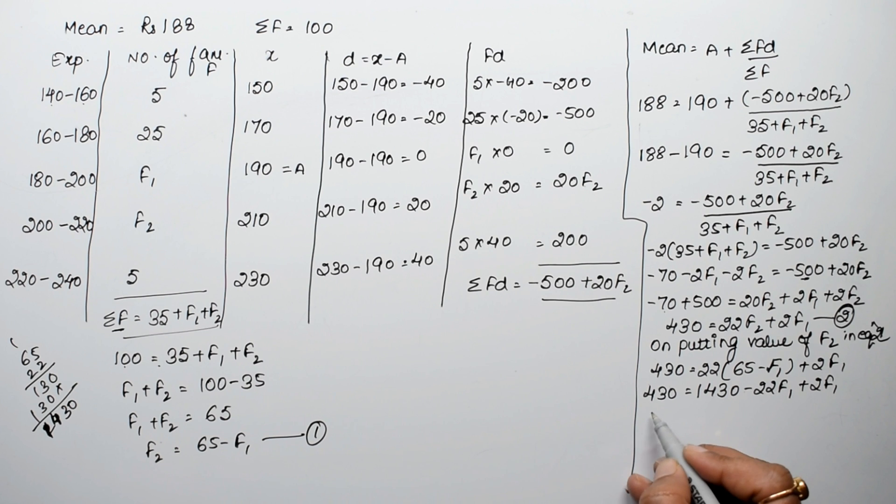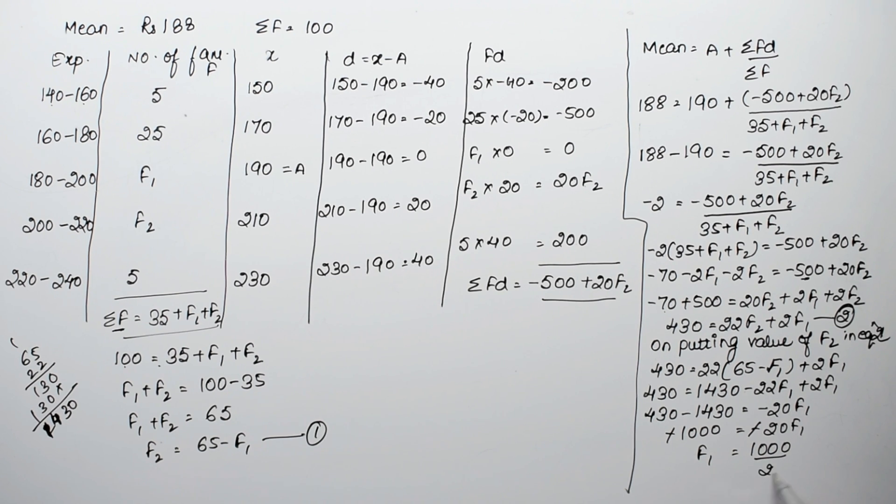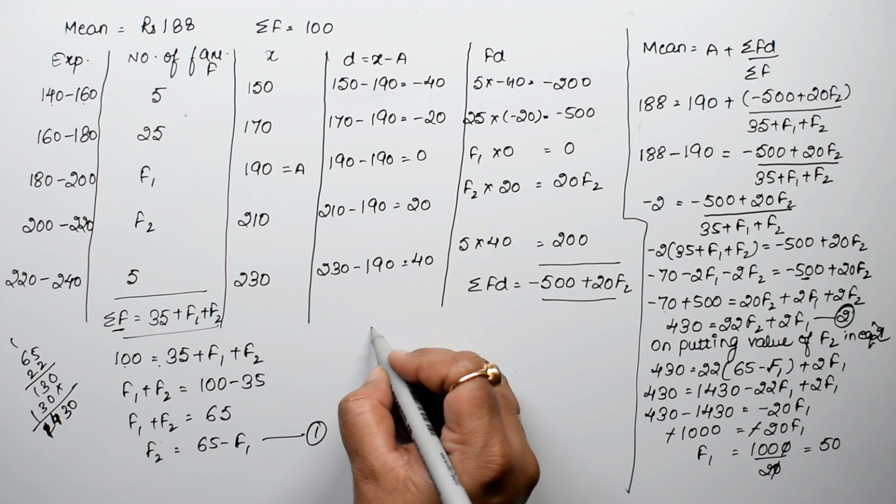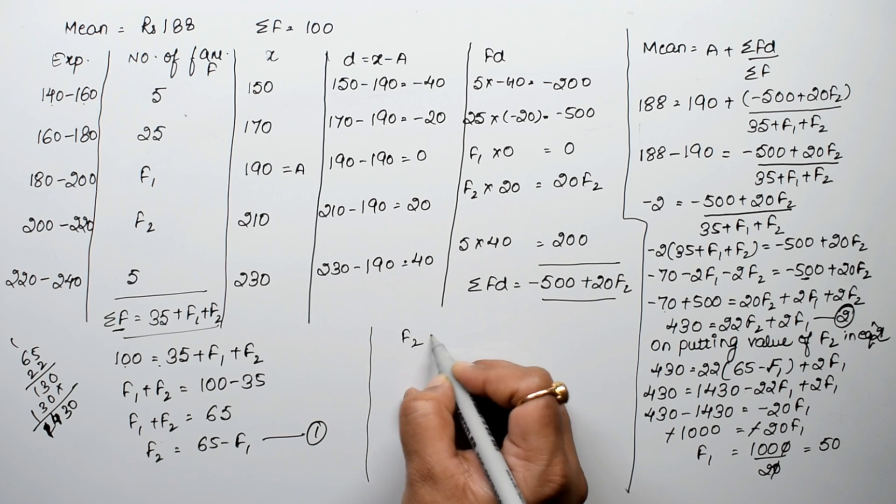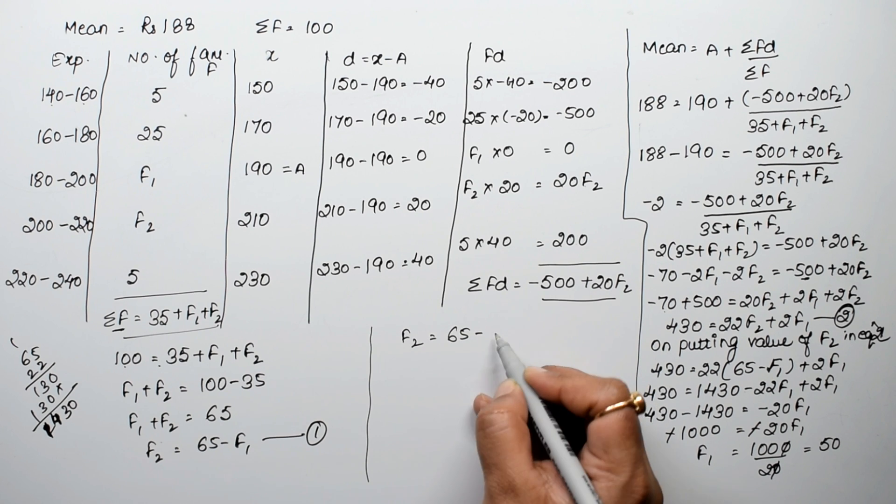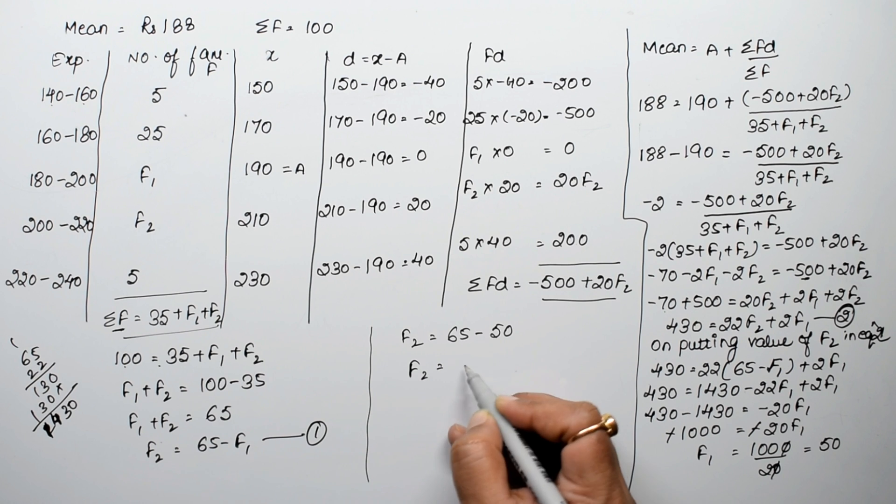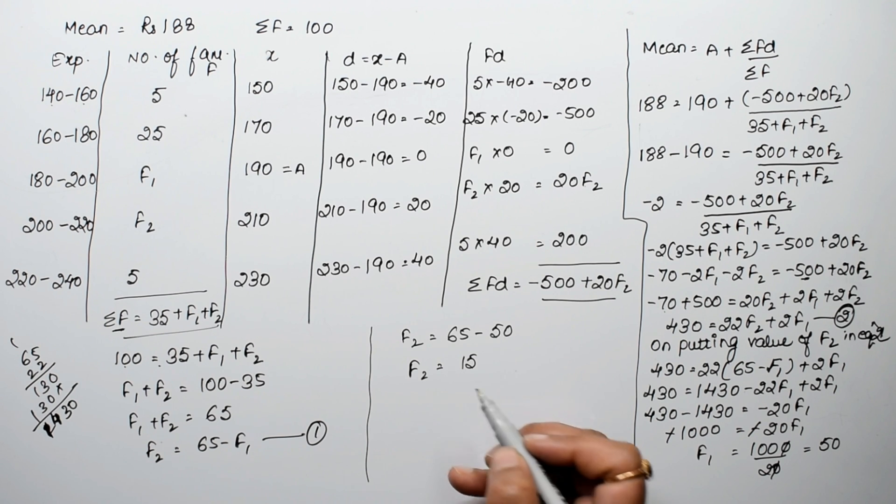Therefore, 430 minus 1430 equals minus 20F1. So minus 1000 equals minus 20F1, giving us F1 equals 1000 divided by 20, which is 50. Now F2 equals 65 minus F1 equals 65 minus 50, so F2 equals 15. Therefore, F1 is 50 and F2 is 15.